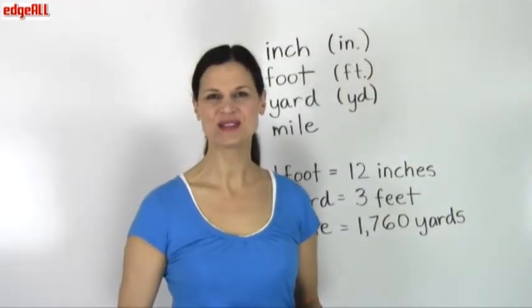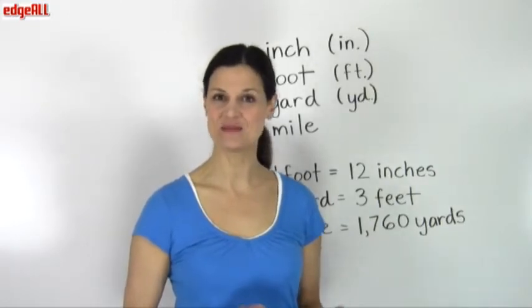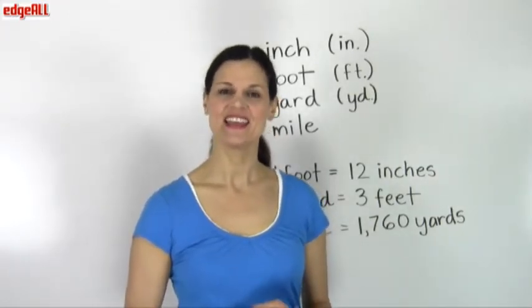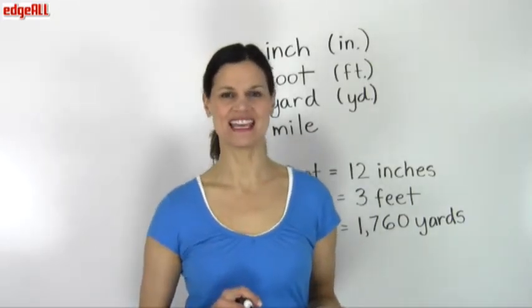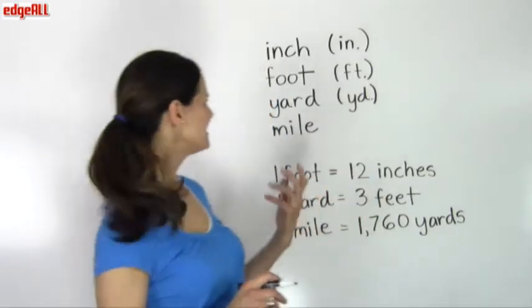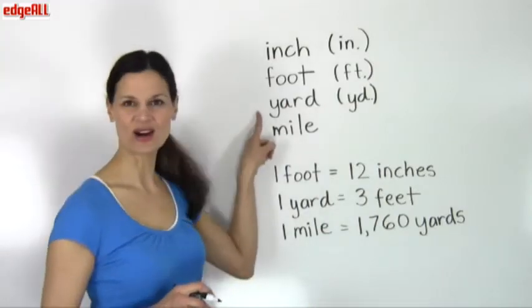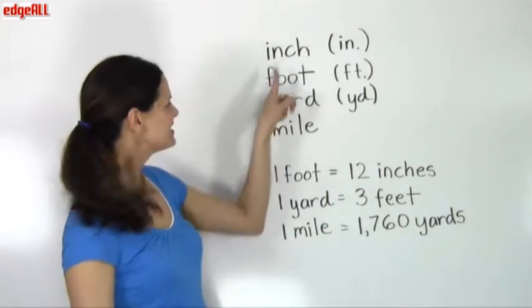There are two popular systems of units to measure distance. In the United States, the smallest unit of length is an inch. Other units are foot, yard, and mile.